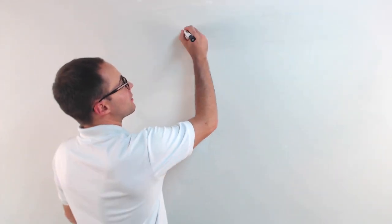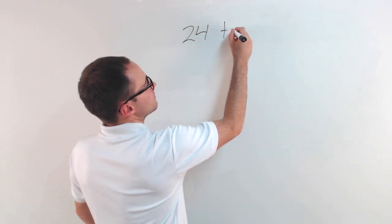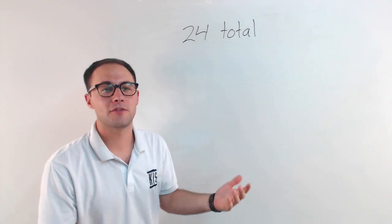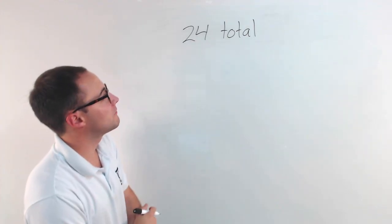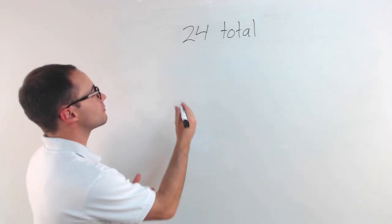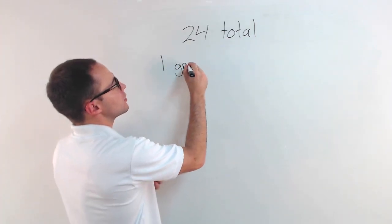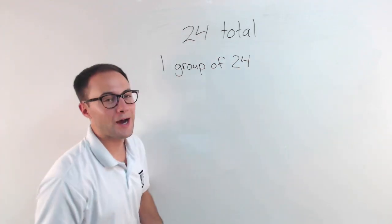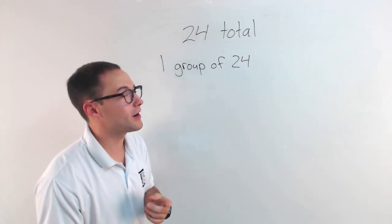How am I going to arrange those desks? So remember I've got 24 total and there's a lot of different options I have. First, I could put everybody together in one big group, right? I could have one group of 24. Now I probably wouldn't do that but I could if I wanted.